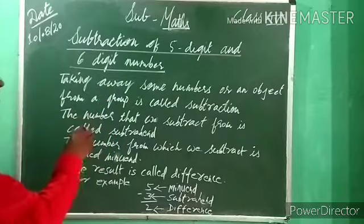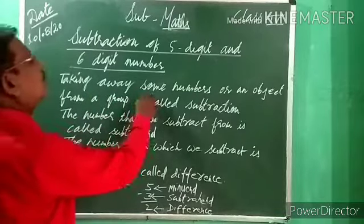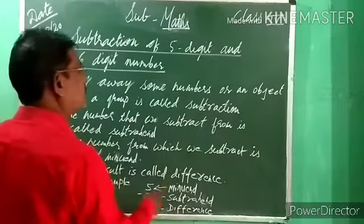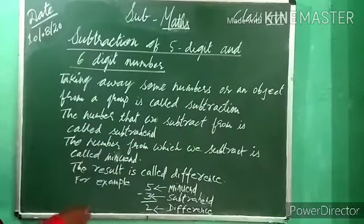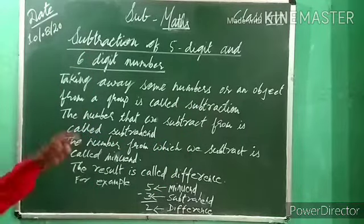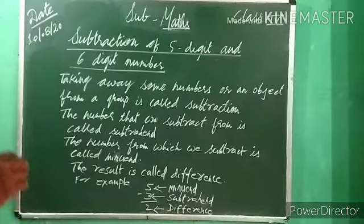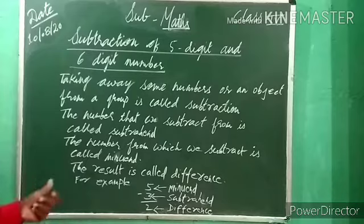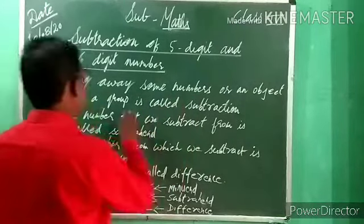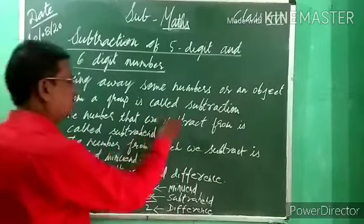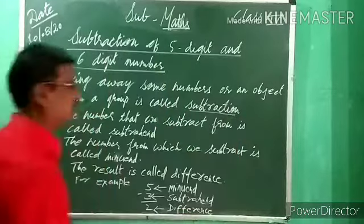Nikhalna — koi cheej nikhalna, ya phir number. Taking away some number or an object from a group. For example, there are students at a table. 3 students get up and leave — how many students will be left? Taking away some number or an object from a group is called subtraction.